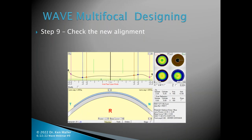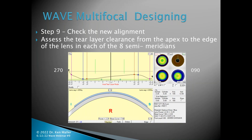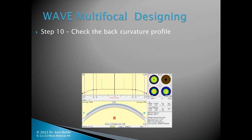Step nine: check the new alignment Wave came up with — it looks very different than before. Assess the tier layer clearance from apex to edge in each of the eight semi-meridians: 0-180, 45-225, 90-270, and 135-315. After telling Wave to align the lens, we basically don't cross the 20-micron line at all — we're doing very nicely getting this aligned up with this particular cornea.